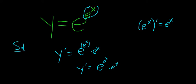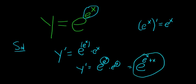You can simplify this, I guess. You have e to the e to the x times e to the x. You can add the exponents. This is e to the e to the x plus x. So you could write it like that.